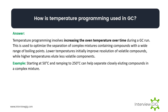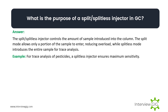How is temperature programming used in GC? Temperature programming involves increasing the oven temperature over time during a GC run. This is used to optimize the separation of complex mixtures containing compounds with a wide range of boiling points. Lower temperatures initially improve resolution of volatile compounds, while higher temperatures elute less volatile components. Example: starting at 50°C and ramping to 250°C can help separate closely eluting compounds in a complex mixture.